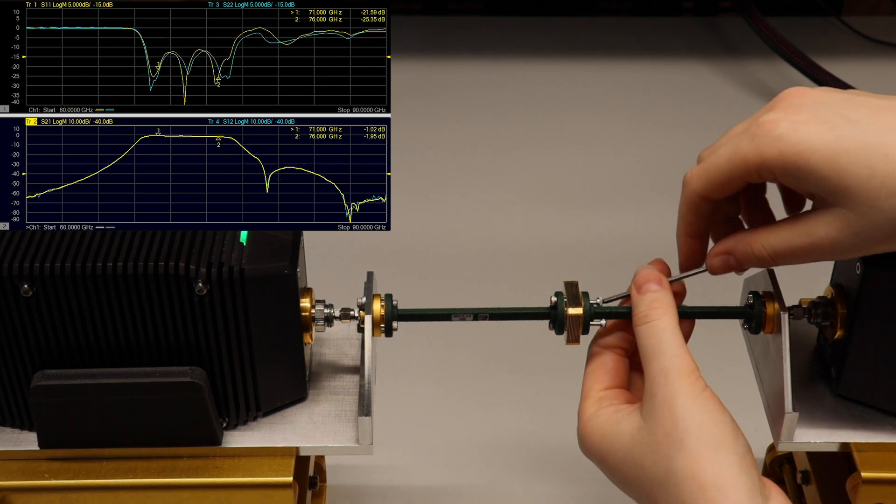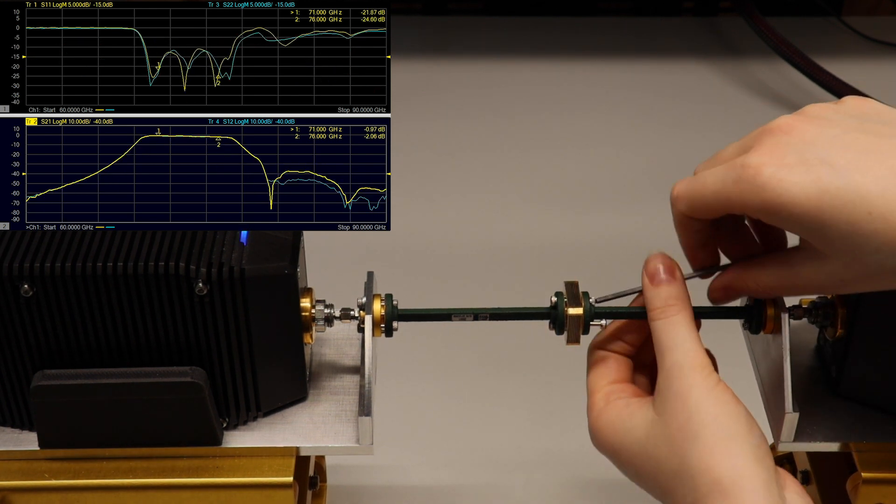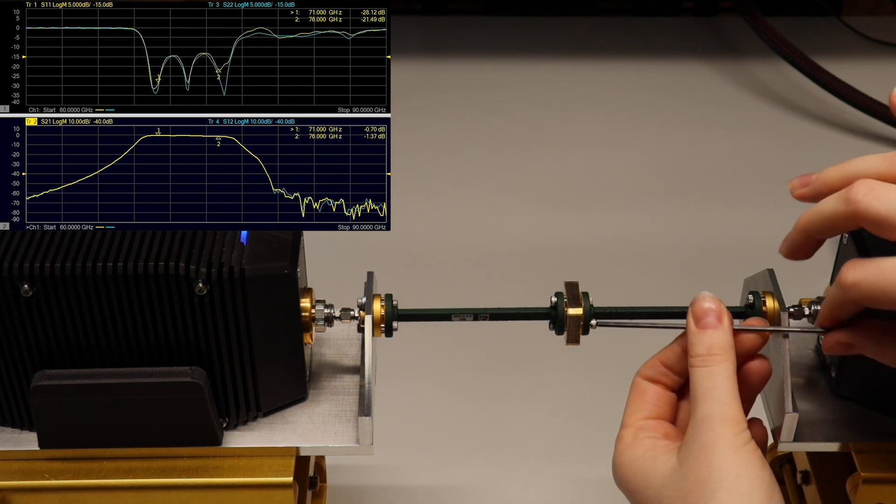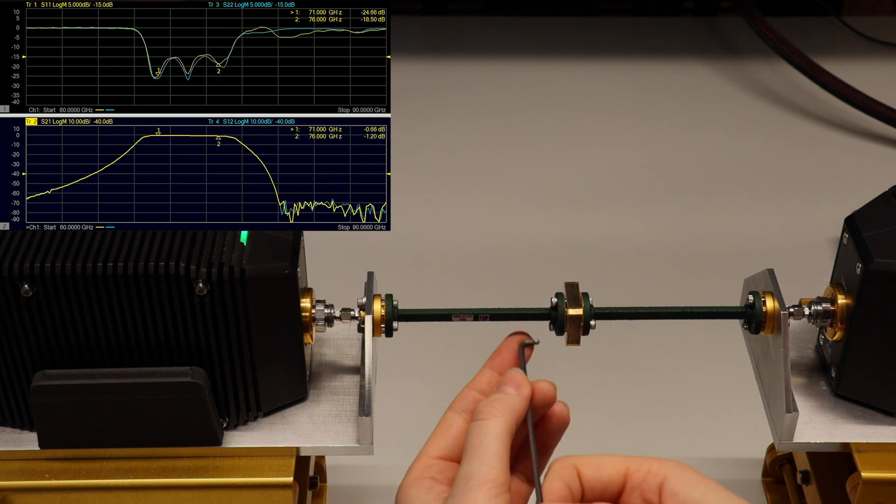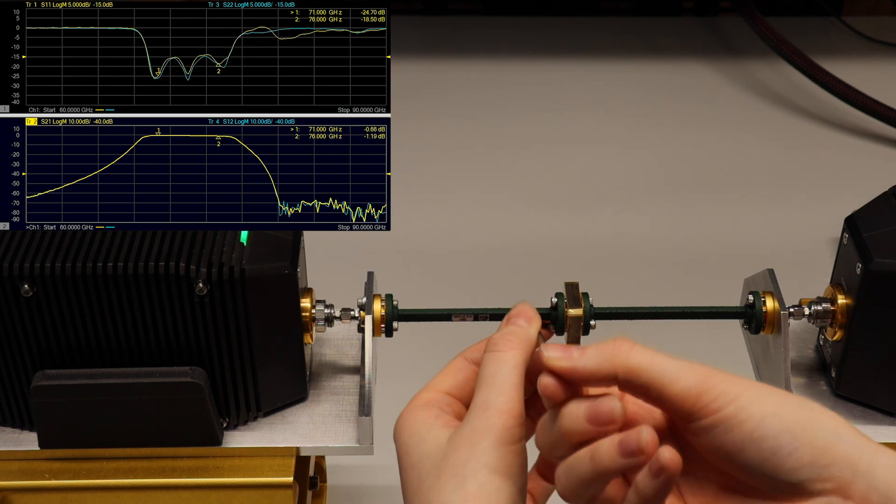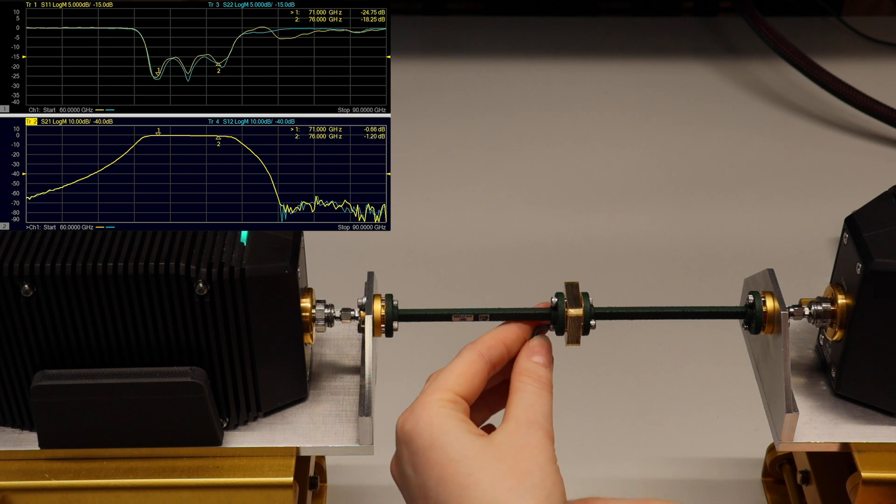This filter is designed for use in E-band and has a passband working from 71 up to 76 gigahertz. As is seen from validation measurements, the filter has an insertion loss of 0.7 dB with a return loss of better than 17 dB.